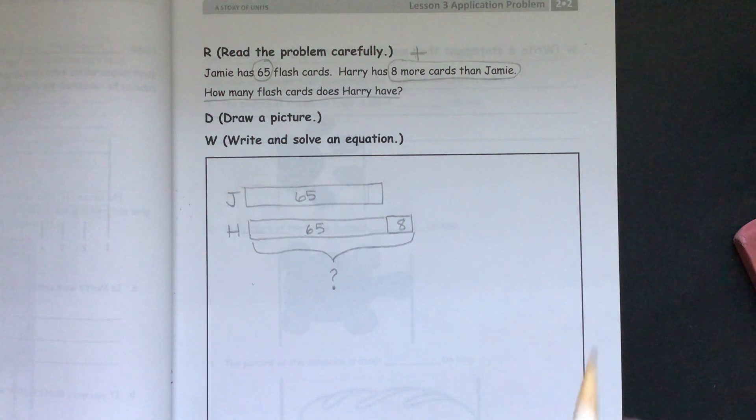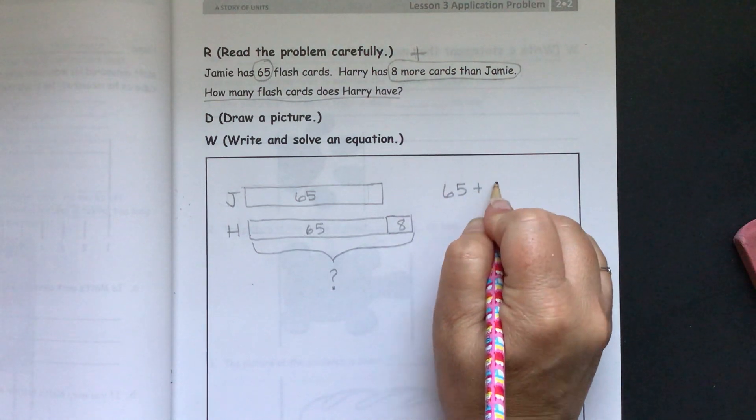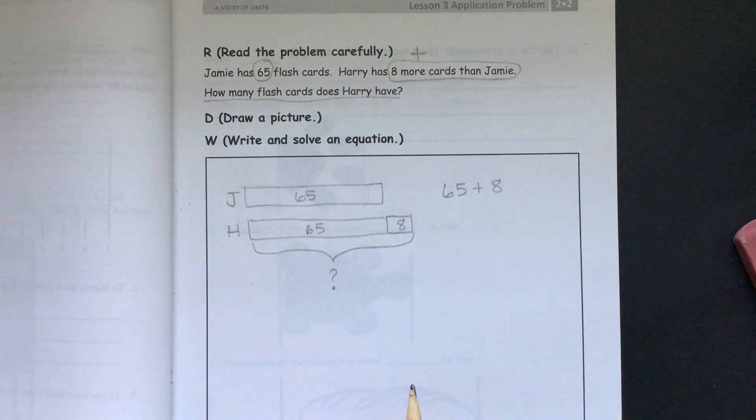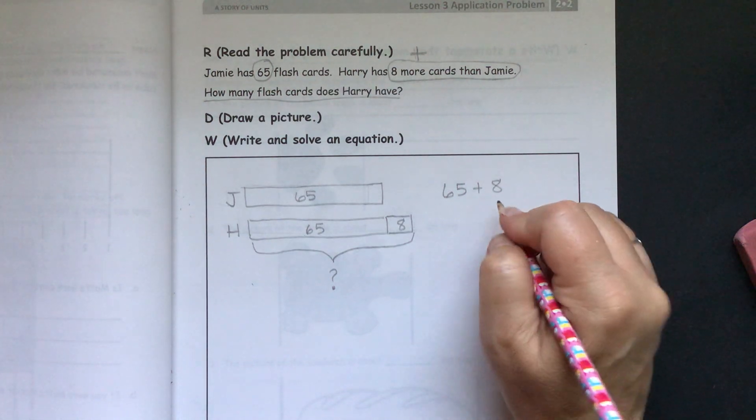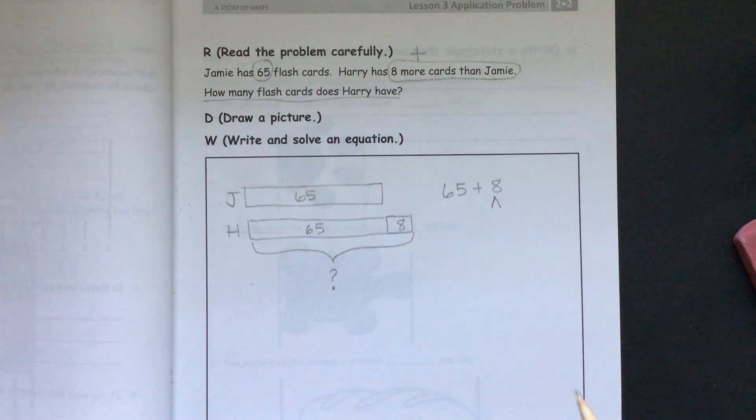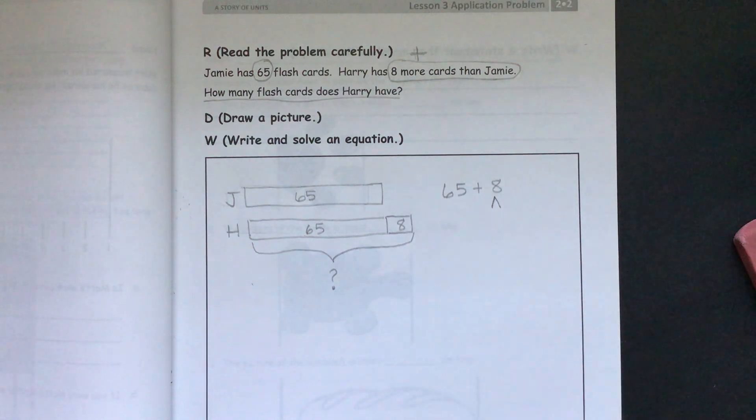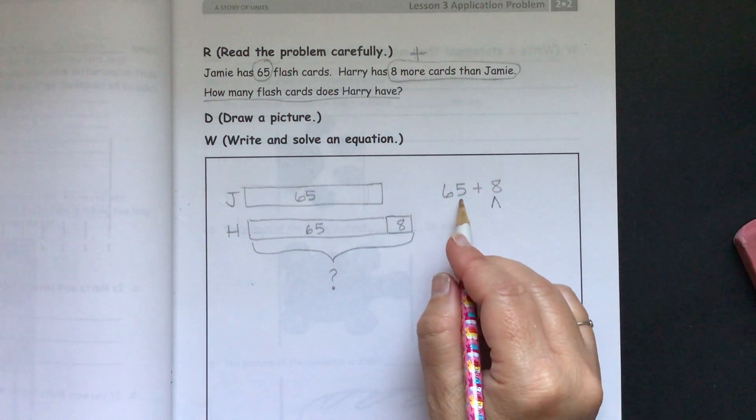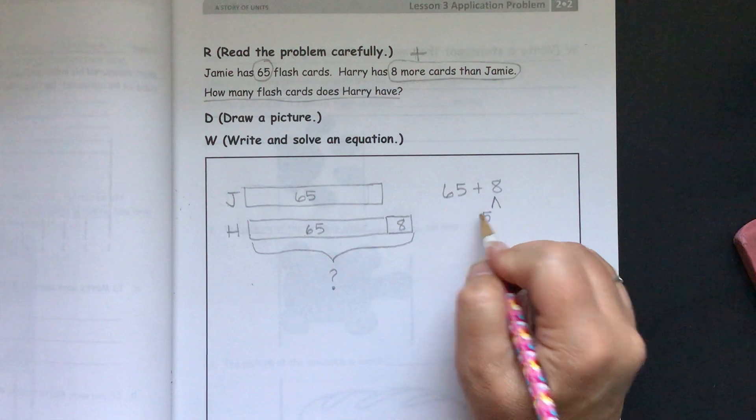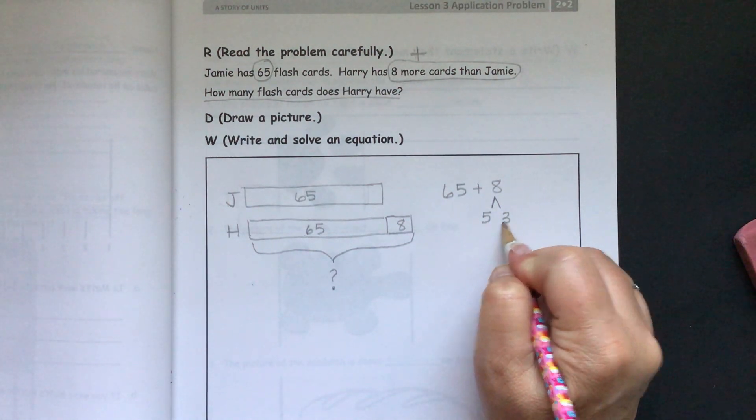Our equation will be 65 plus 8. Now, if you remember from Module 1, we can break apart numbers to make it easier for us to add. If we think 65, how many more does it take to get up to our next 10, which is 70. So, 65, we need 5 more to get to our next 10. And then 5 plus 3 will equal 8.